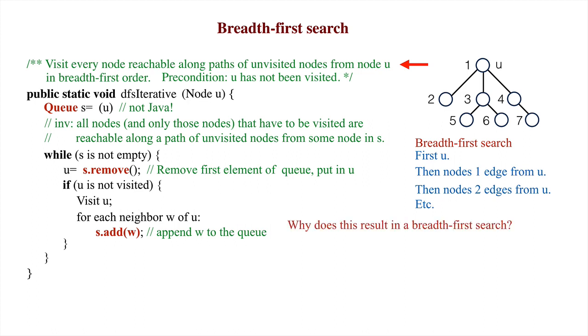We explain why this results in a breadth-first search. First, for any integer I at least zero, nodes that are I edges from U are put in the queue before nodes that are I plus one edges from U.